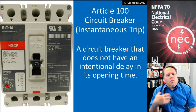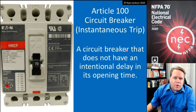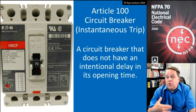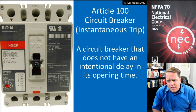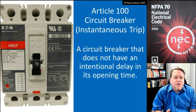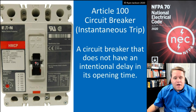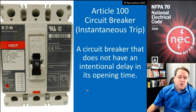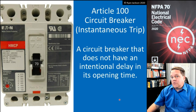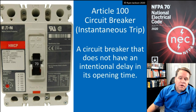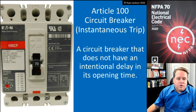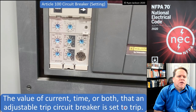We also have instantaneous trip circuit breakers. This is not something used in a general application — you won't find it in your house. It's a circuit breaker that does not have an intentional delay in its opening time. When it hits, say, 70 amps, it trips right there. It doesn't really have a time-current curve because it's not an inverse time circuit breaker — it's just instantaneous: when it hits the opening current, there is no intentional delay.